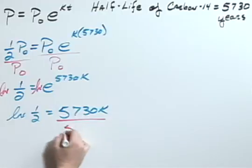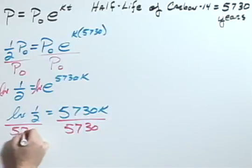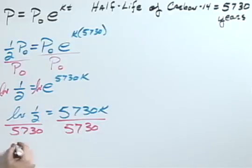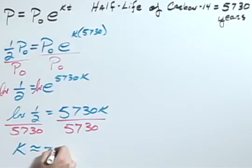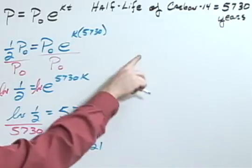Dividing both sides by 5,730 gives me my K of approximately negative 0.000121. So using this value we can determine the current age of the wooden chalice.